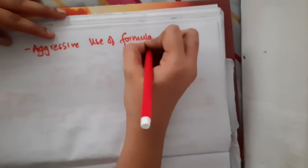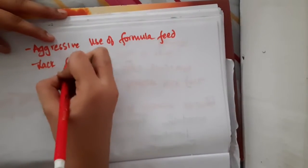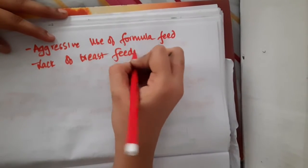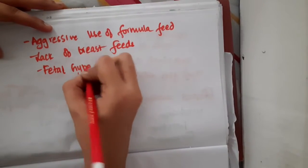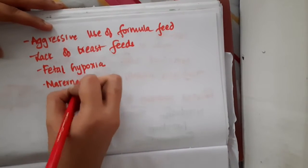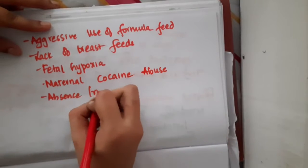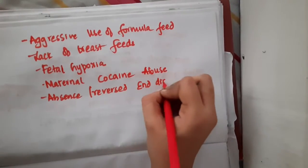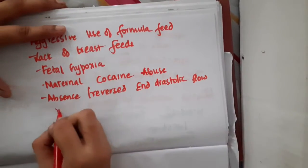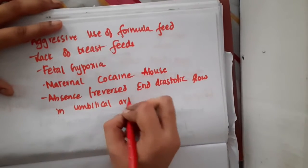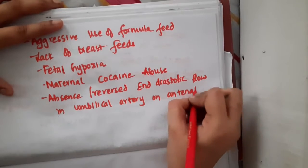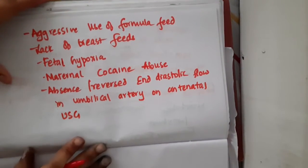The aggressive use of formula feed and lack of breastfeeding also cause necrotizing enterocolitis. Fetal hypoxia, maternal cocaine abuse, and absent or reversed end-diastolic flow in the umbilical artery on antenatal USG are also risk factors.